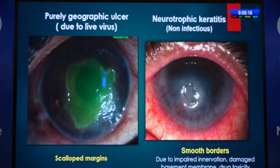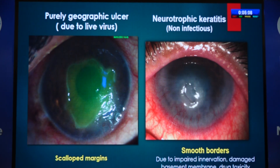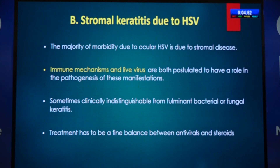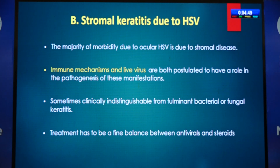Metaherpetic or neurotrophic keratitis shows reverse staining: rose bengal stains the base and fluorescein diffuses beyond the edges. Stromal keratitis due to HSV accounts for the majority of morbidity — not epithelial or endothelial disease. Here both immune mechanisms and live virus play a role. Sometimes in very fulminant cases it is difficult to differentiate from bacterial or fungal keratitis, and initial treatment may have to be antibacterial or antifungal by exclusion.